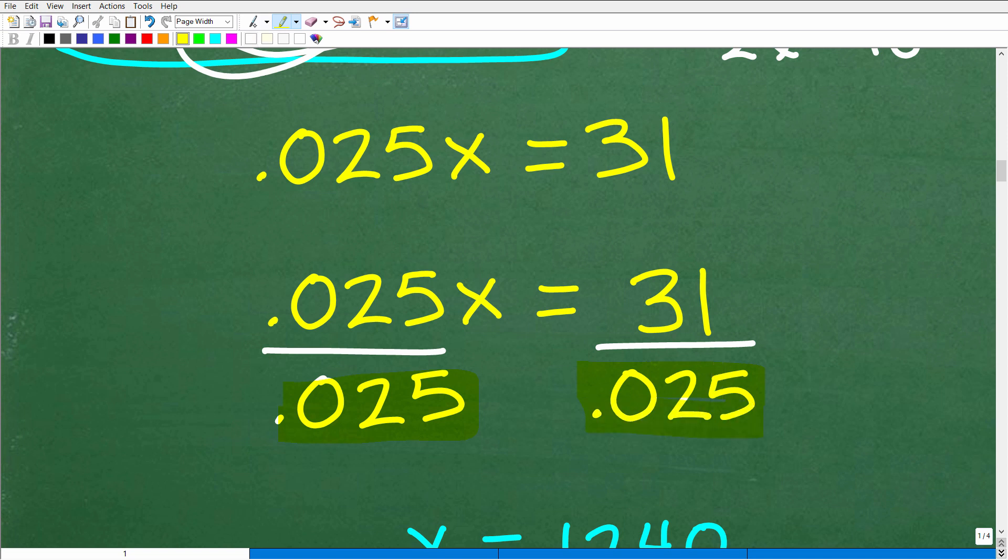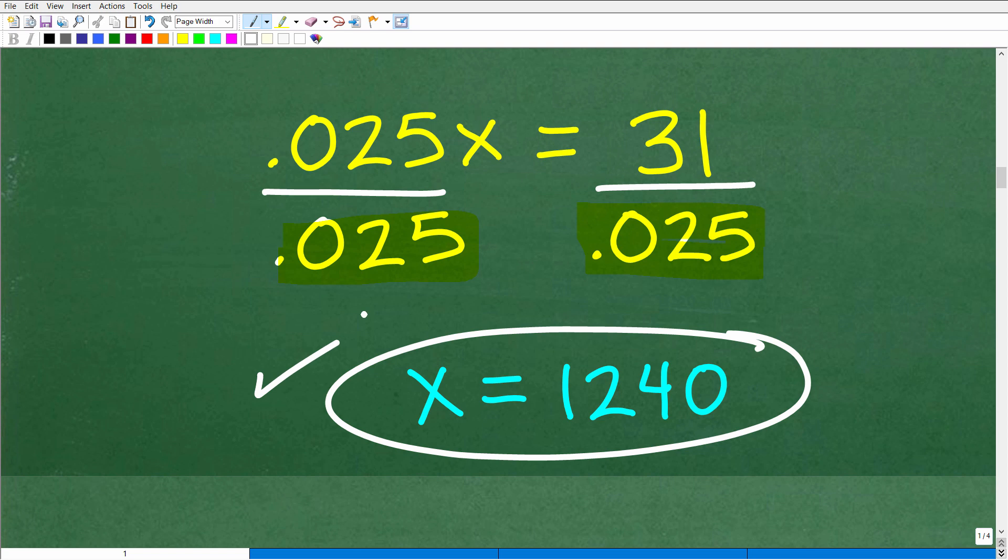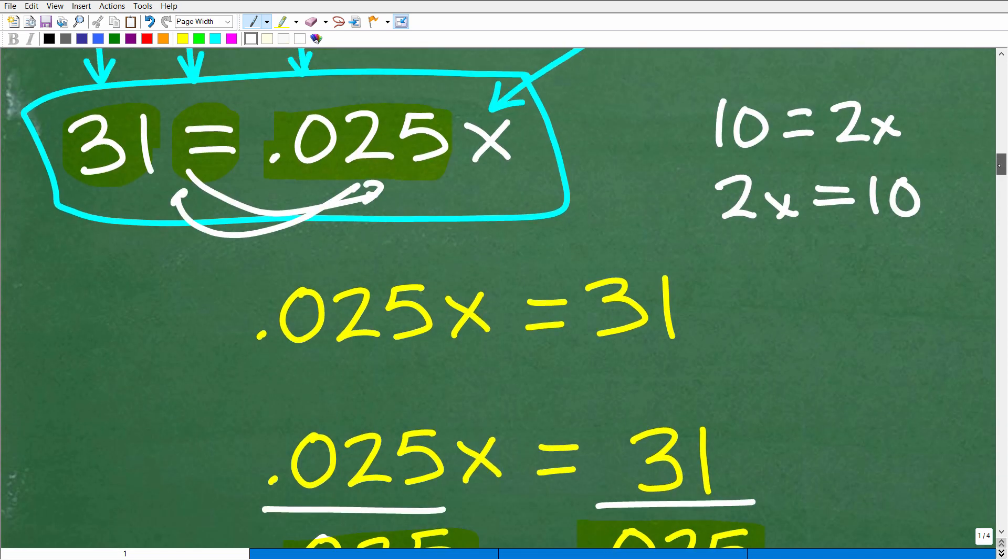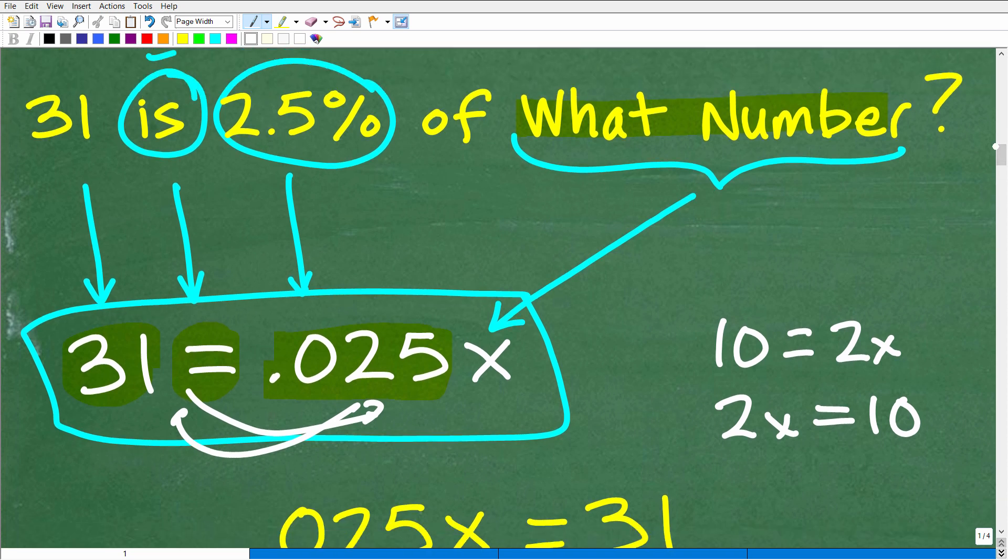Again, feel free to use your calculator. So 31 divided by 0.025 is going to be 1,240. So again, algebra is an outstanding tool to solve all sorts of problems to include percent.